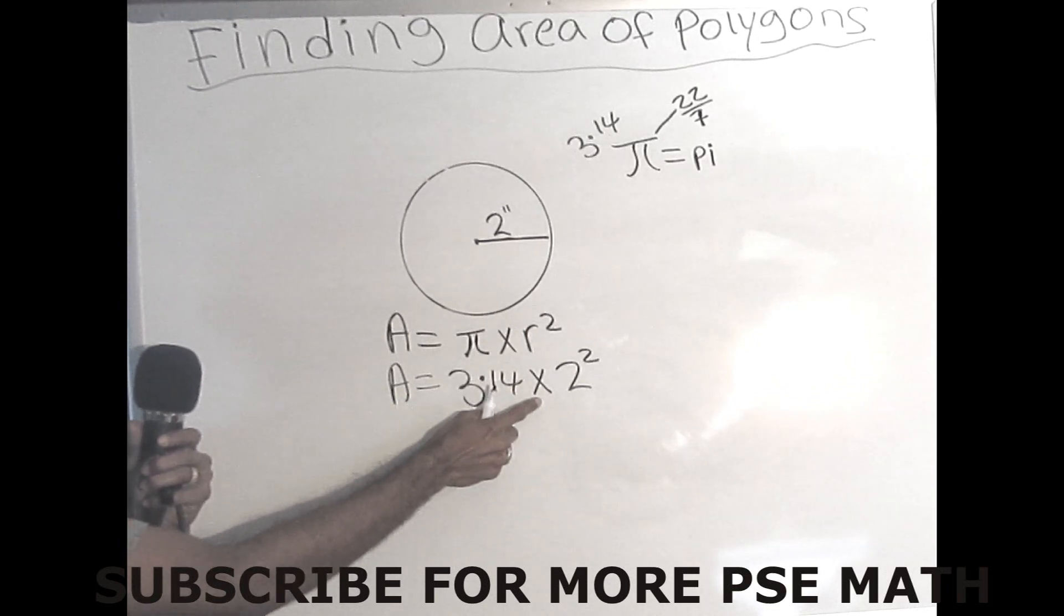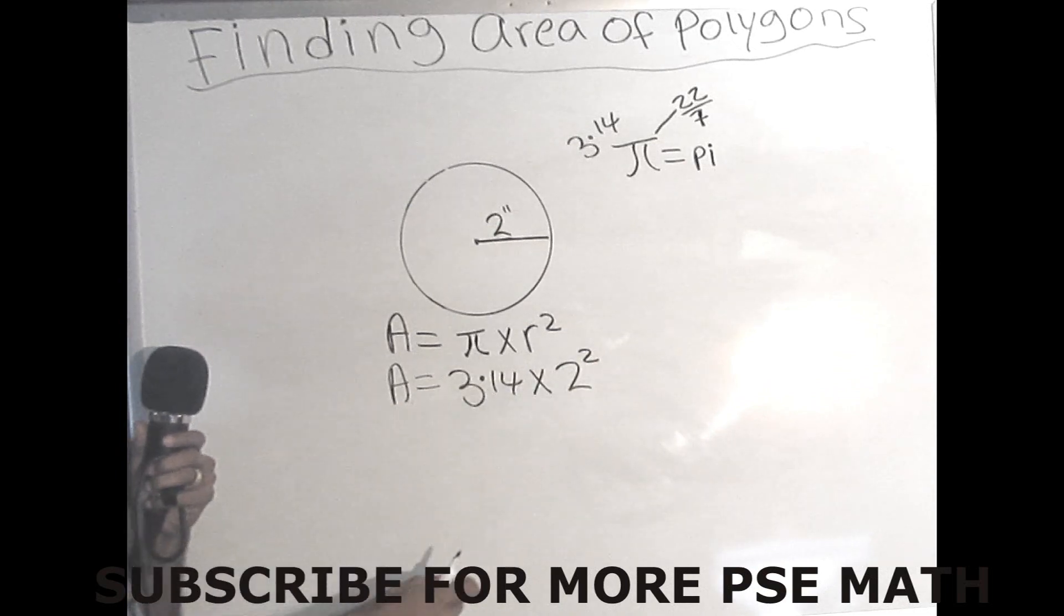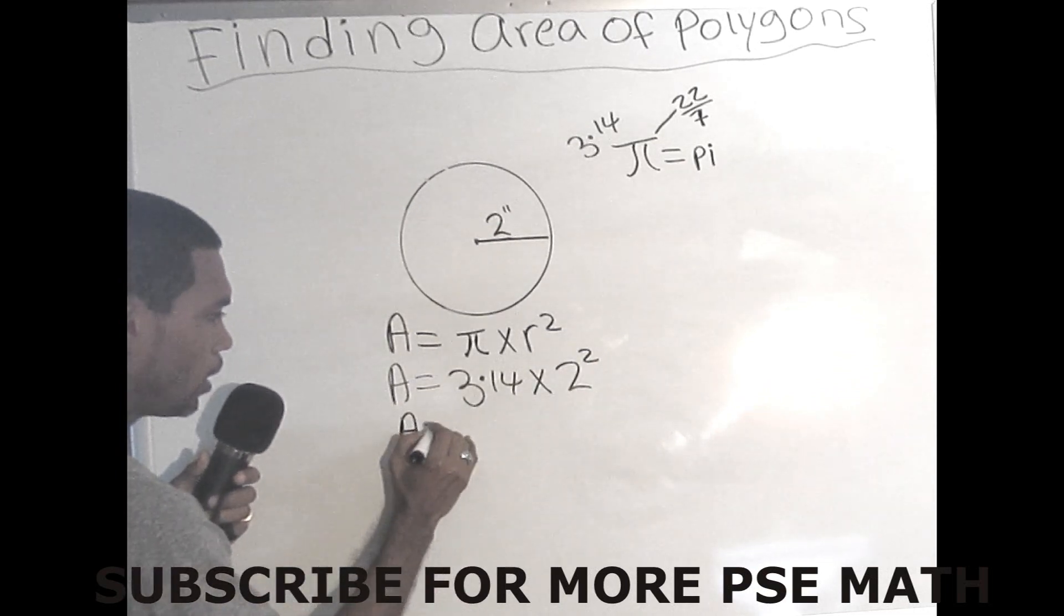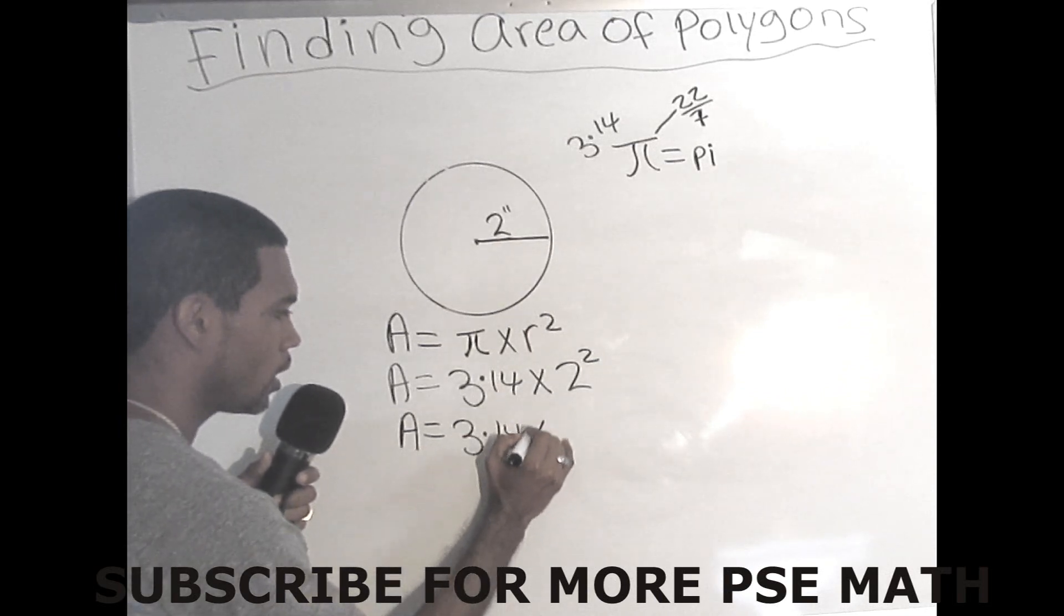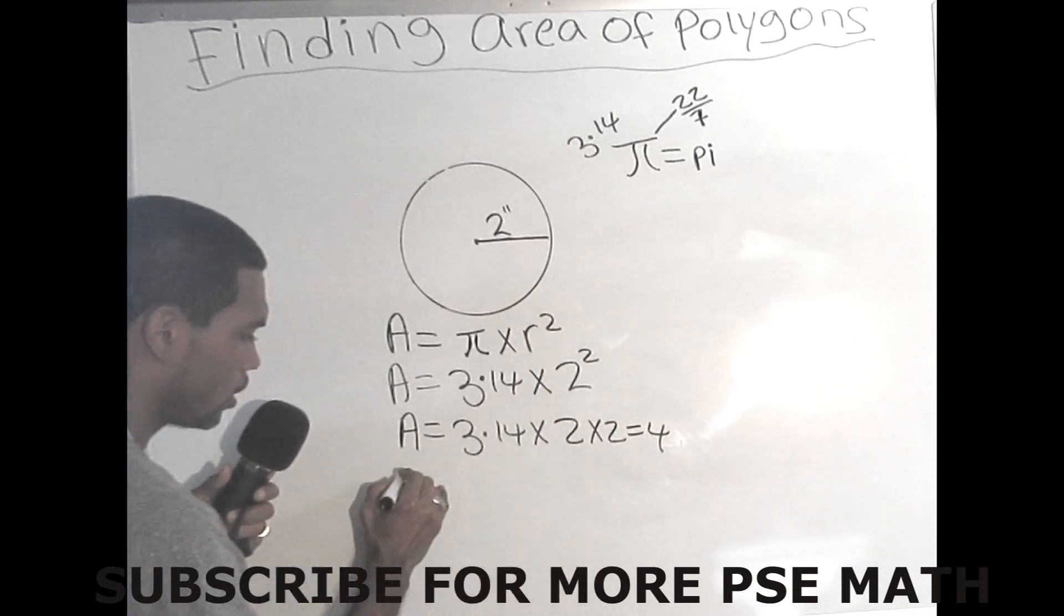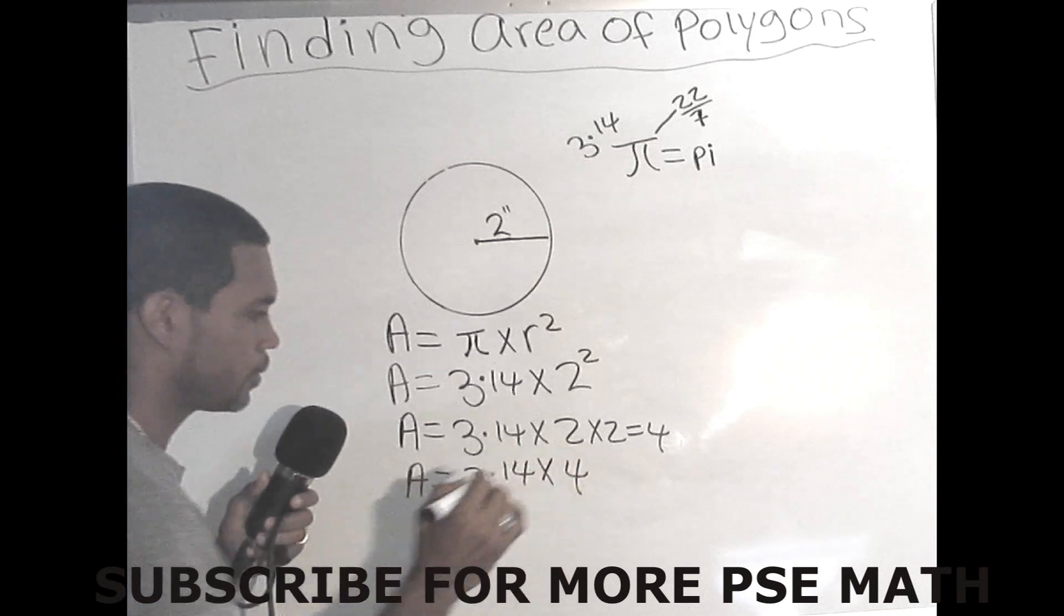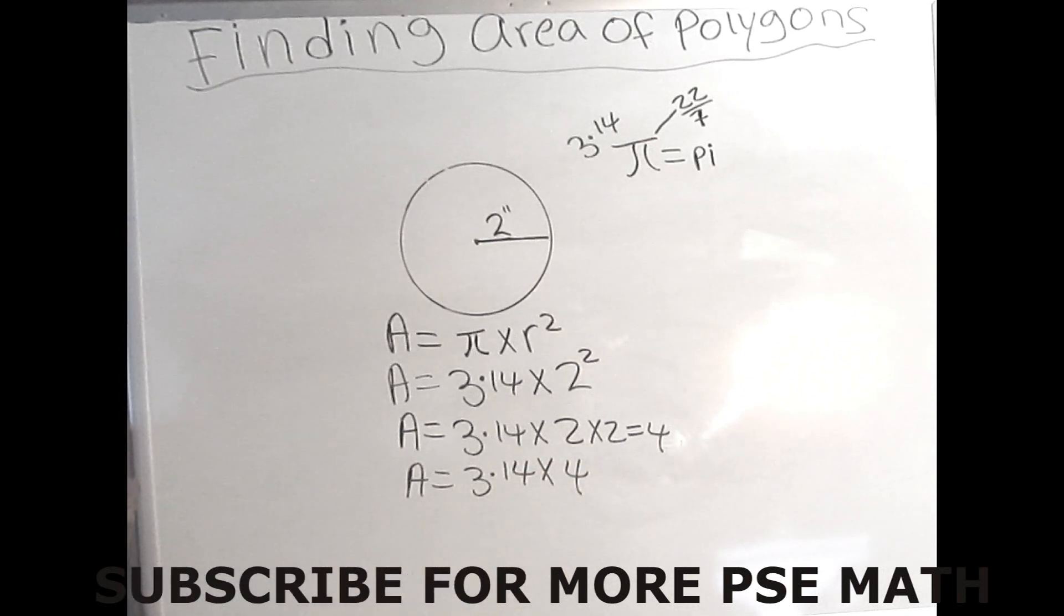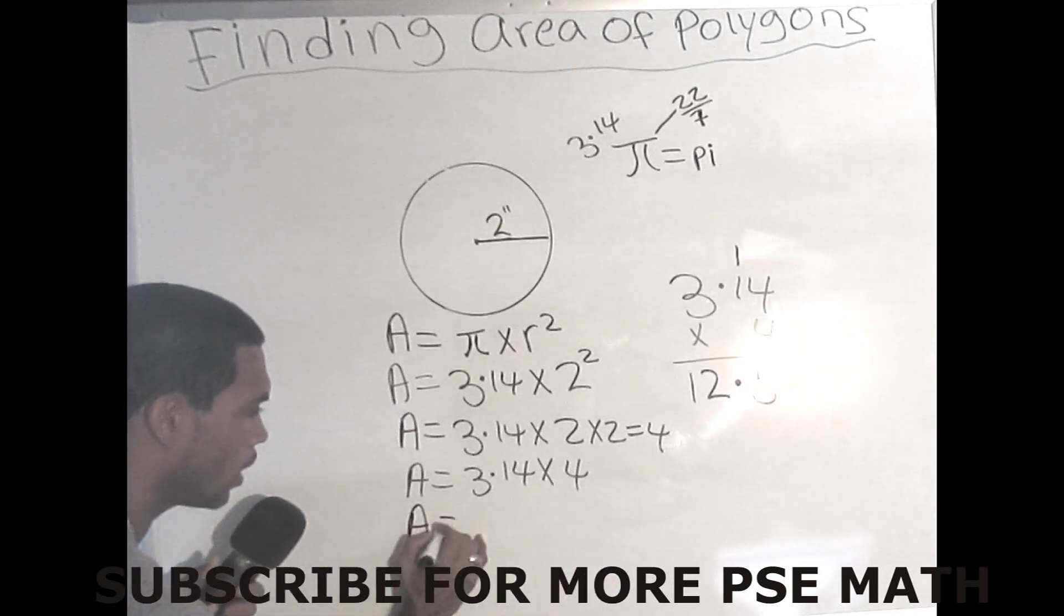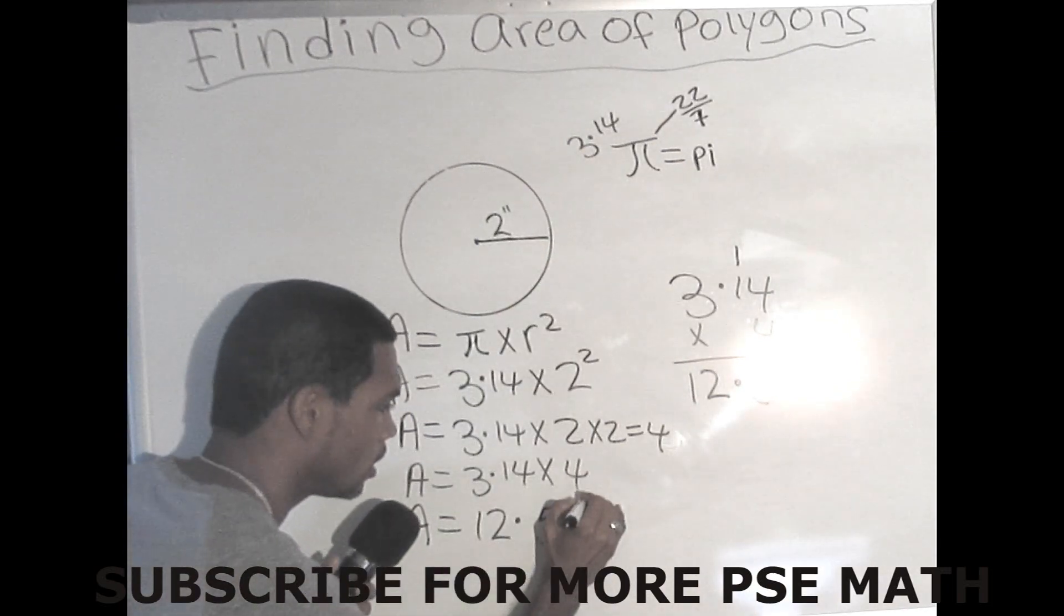Then times from the formula, and r squared. R squared is your number here. So 2, and that's 2 squared. So we continue with the formula: area equals 3.14 times 2 squared. Remember 2 squared is 2 times 2, which is equal to 4. So area equals 3.14 times 4.